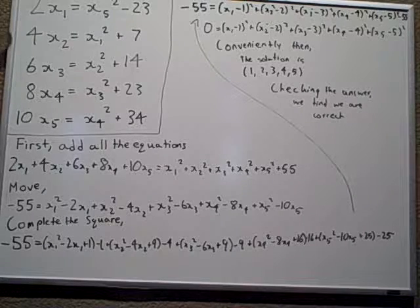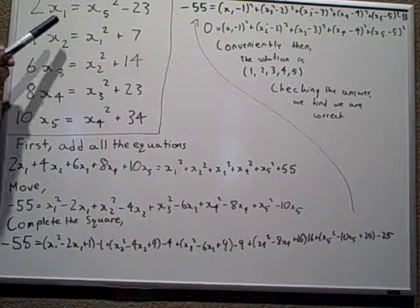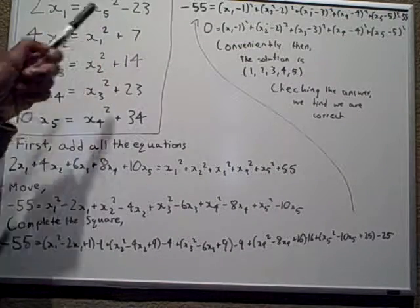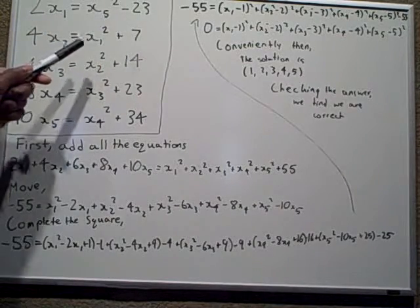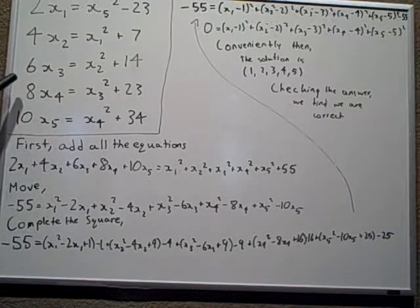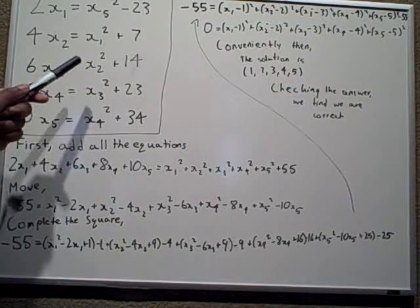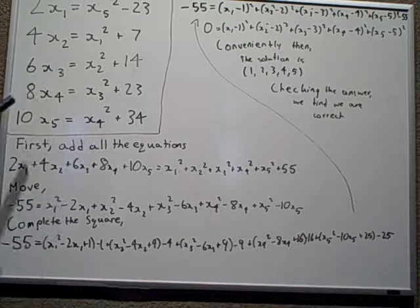We have this problem where 2x1 equals x5 squared minus 23, 4x2 equals x1 squared plus 7, and 6x3 equals x2 squared plus 14.